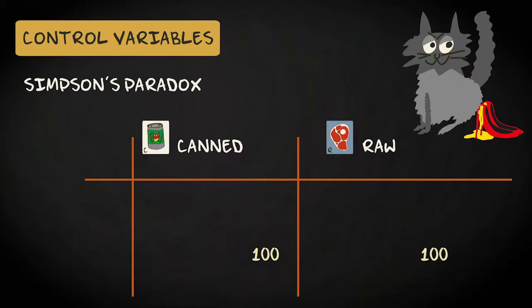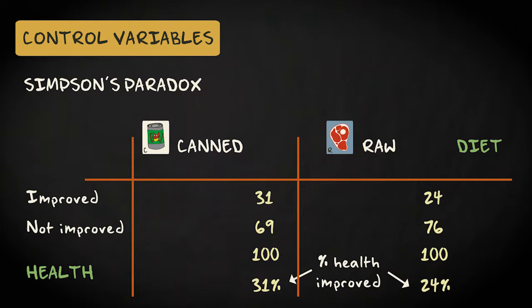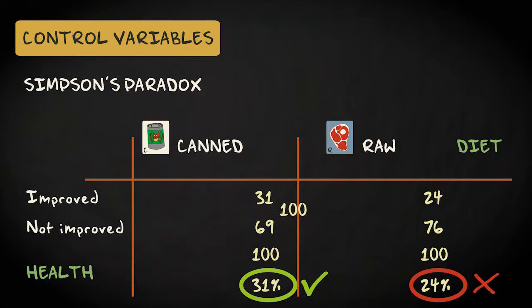Here's another example. Suppose we approach 200 owners of cats with urinary problems. 100 were diagnosed and prescribed a raw meat diet. 100 were diagnosed and prescribed special canned food. We assess if the cat's health improved after feeding the prescribed diet. Suppose we find that 24% of cats on a raw meat diet improved compared to 31% on a canned food diet. This would suggest advising canned food in the future.